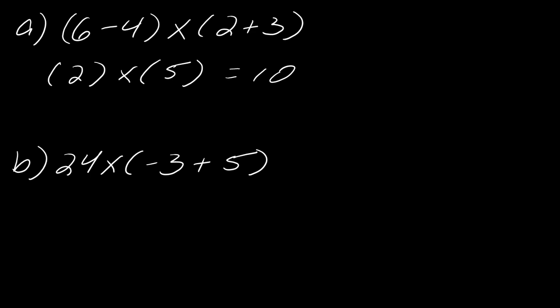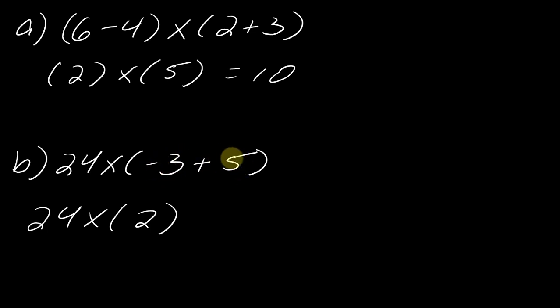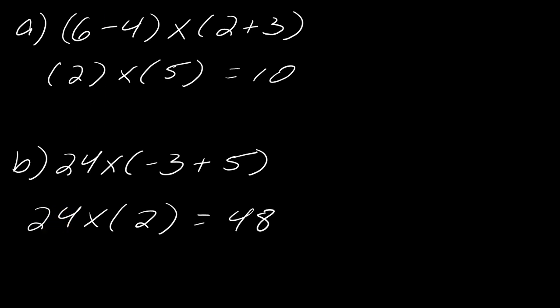For this next example, I have to do the parentheses first. Inside the parentheses I have negative 3 plus 5, which equals 2. Remember, if you wrote negative 2, just keep in mind that 5 is bigger than negative 3 — it's really 5 minus 3. So now I have 24 times 2, and that equals 48.